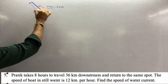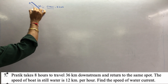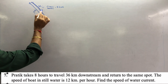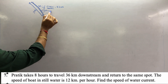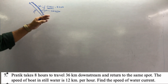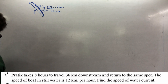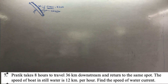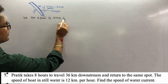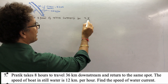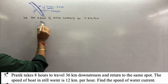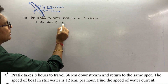Pratik goes 36 km downstream and then 36 km upstream. The river current also has speed. If you go downstream, the water supports the boat; if you go upstream, the water opposes the boat. We assume: let the speed of the river current be x km per hour. The speed of the boat in still water is given as 12 km per hour.